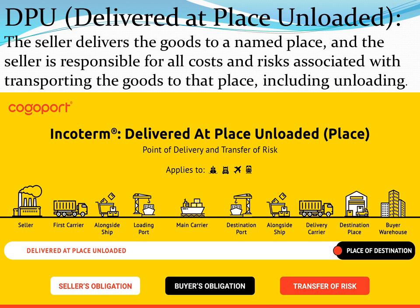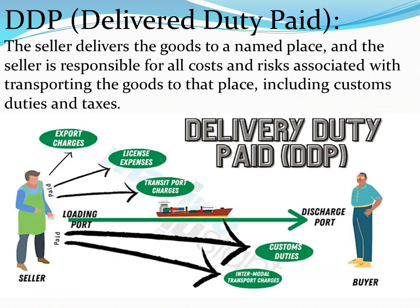DPU or Delivered at Place Unloaded: Under this term the seller delivers the goods to a named place and the seller is responsible for all costs and risks associated with transporting the goods to that place, including unloading.